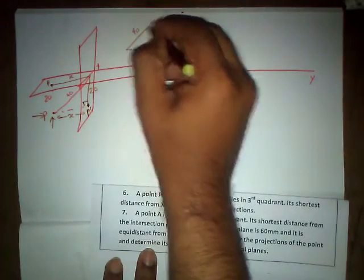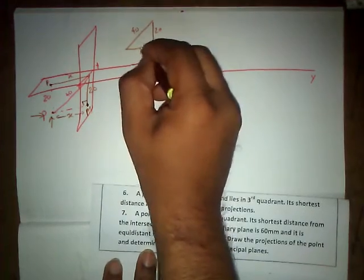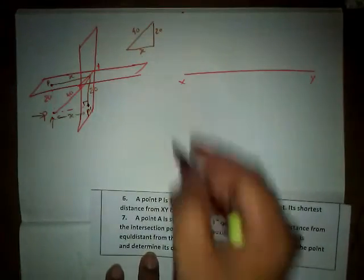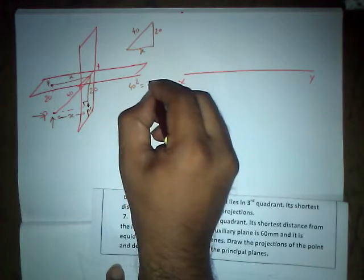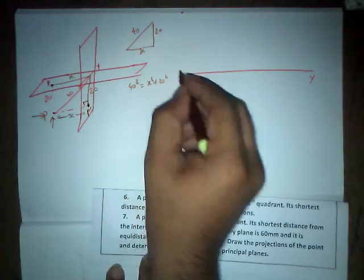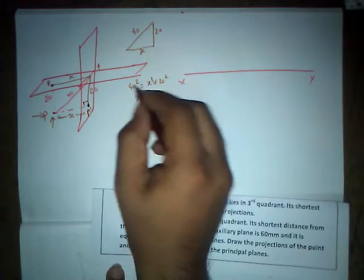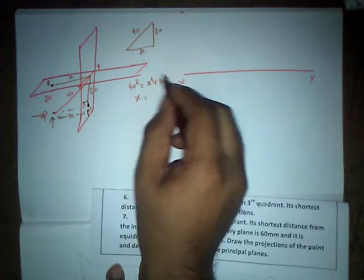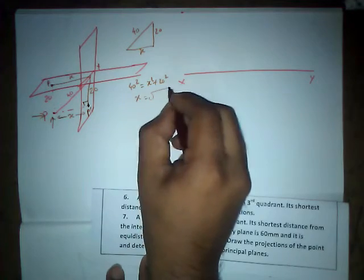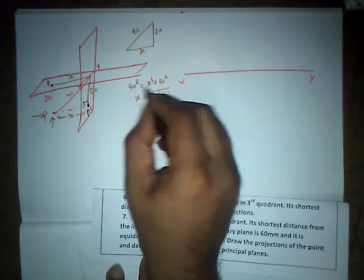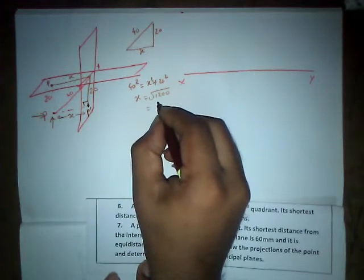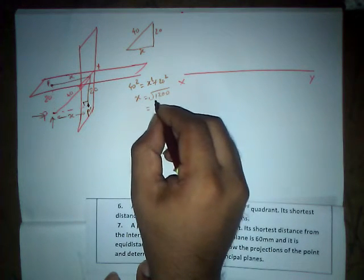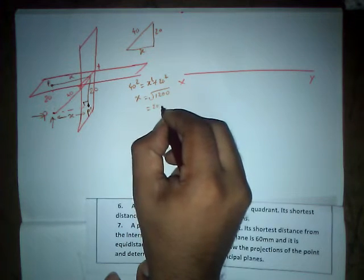So this is 40, this is 20 and this is X. If we apply the Pythagoras theorem we are going to get 40 square is equal to X square plus 20 square. So X is equal to, this is going to be 1600 and this is 400. So this is going to be root over 1200, that is 1600 minus 400. So root 1200 is nothing but 400 into 3. So root 400 is nothing but 20 root 3.